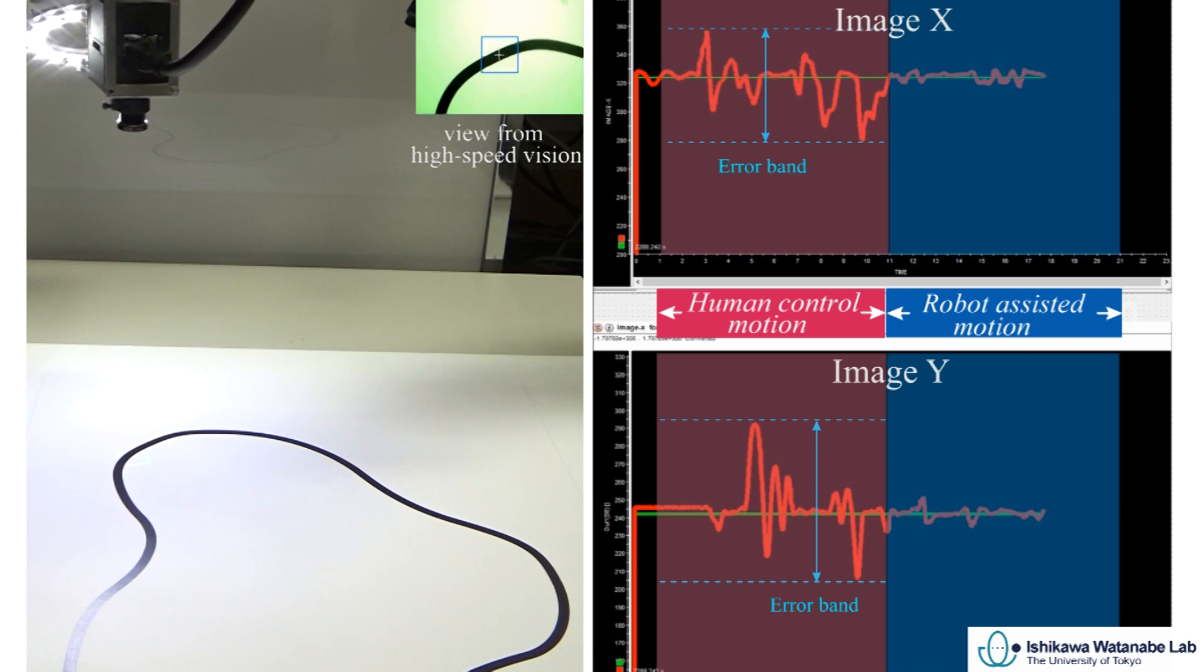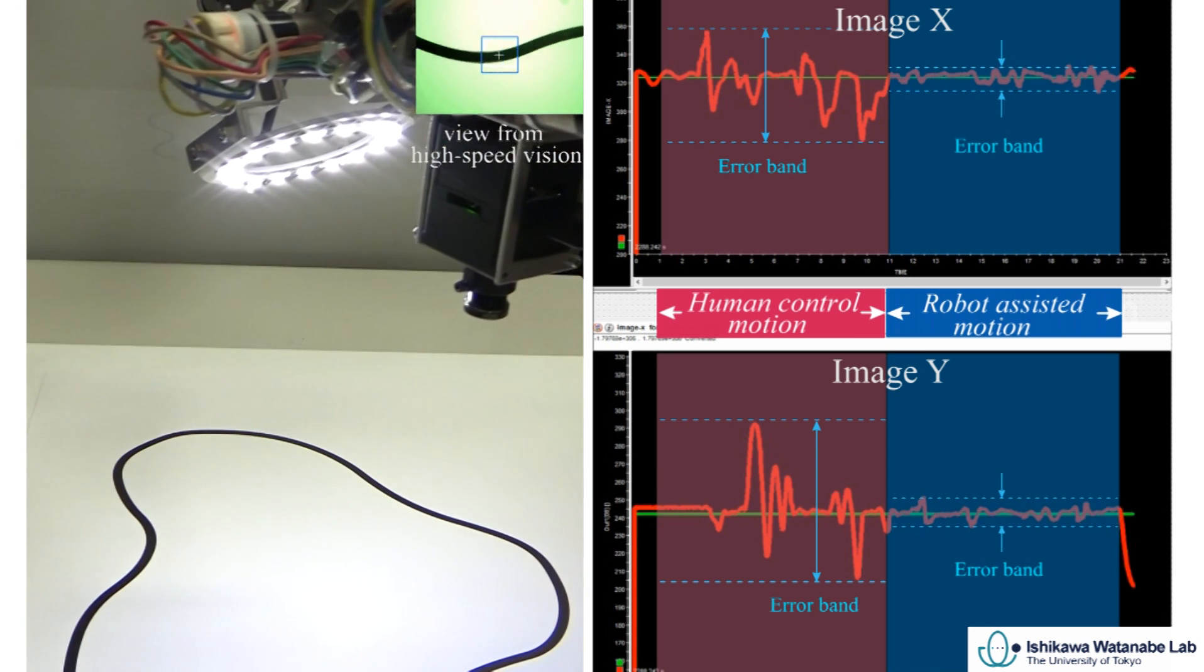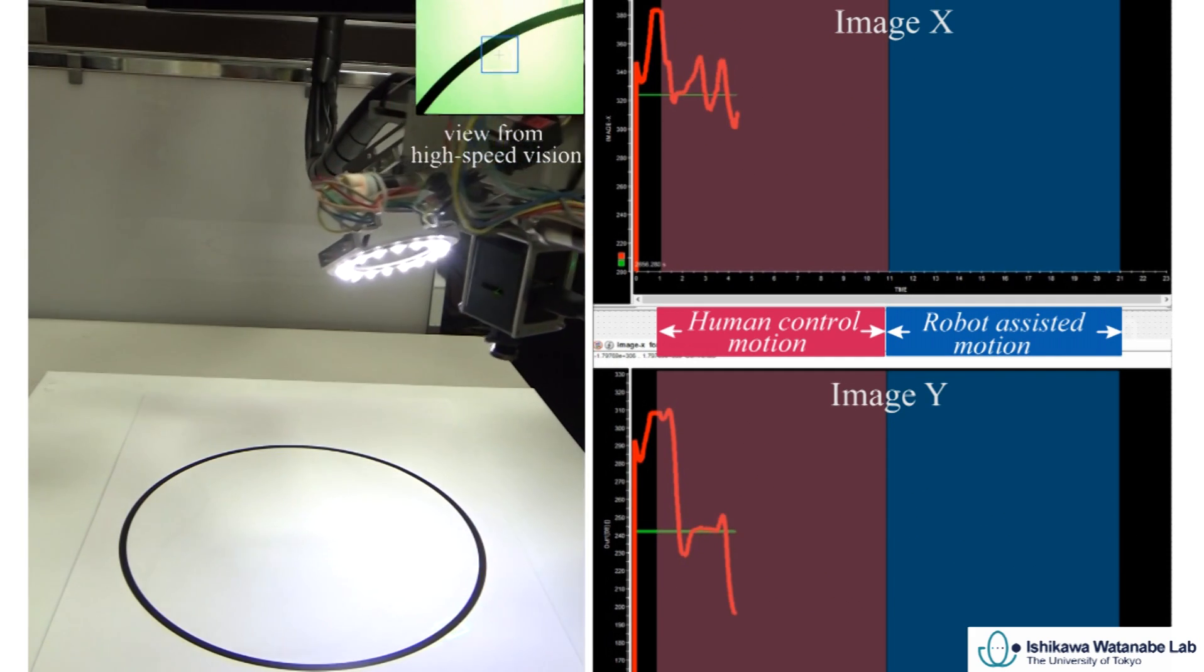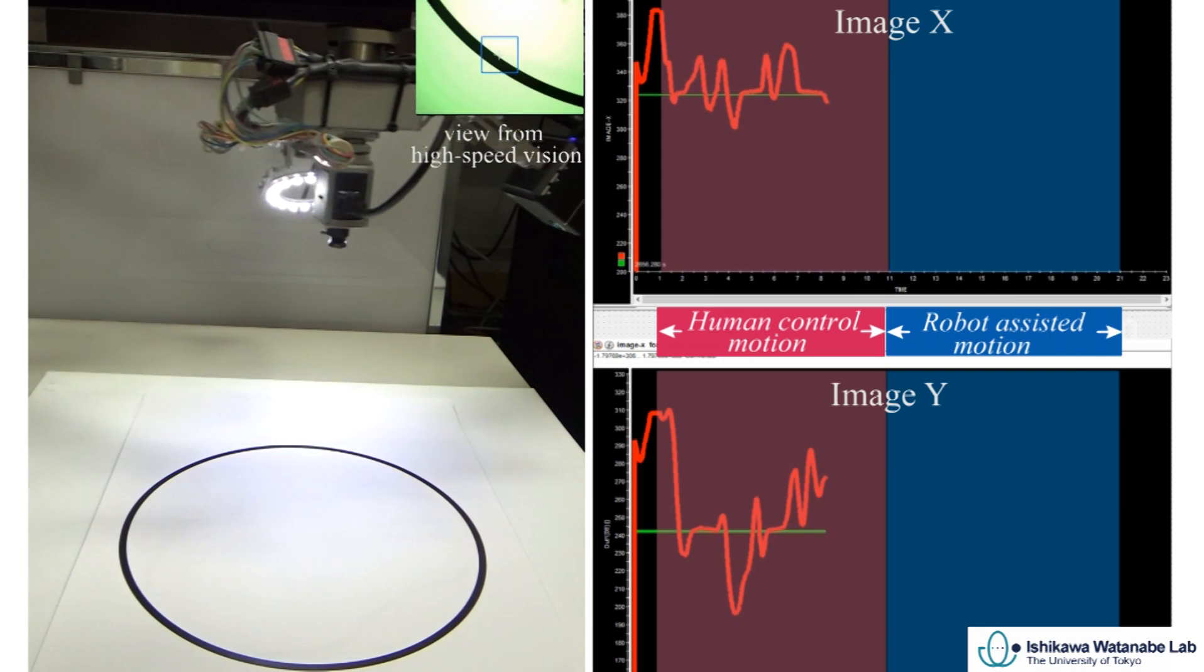With the active assistance of the robot based on 1000 Hz visual feedback in local manner, tracking error is reduced dramatically compared to that of human control motion to realize high-performance manipulation traditionally difficult for human.